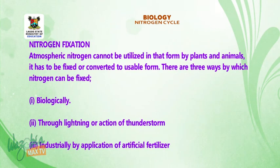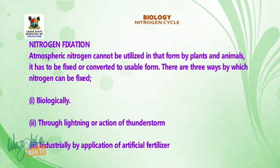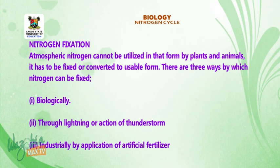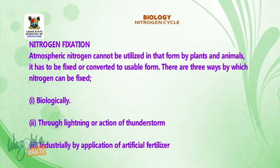Nitrogen fixation. Atmospheric nitrogen cannot be utilized in that form by plants and animals. It has to be fixed or converted to a usable form. There are three ways by which nitrogen can be fixed.